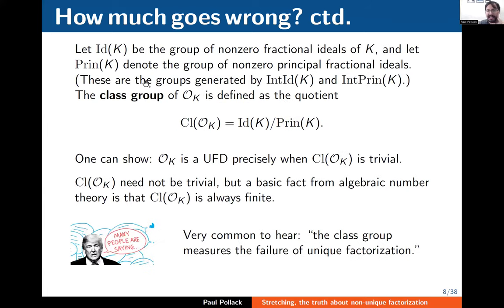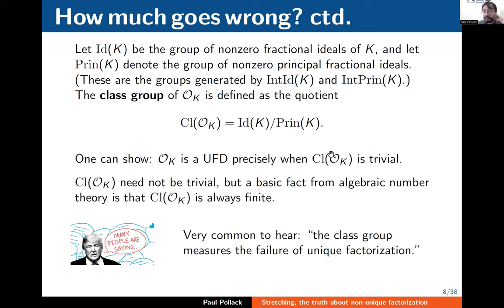What you really want is to look not at integral ideals but at the groups of fractional ideals generated by those monoids. Let Id(K) be the group of non-zero fractional ideals of K, let Prin(K) be the group of non-zero principal fractional ideals, and define the class group as the quotient Id(K) mod Prin(K). This is typically how one talks about measuring the failure of unique factorization. The class group is trivial precisely when O_K is a UFD.